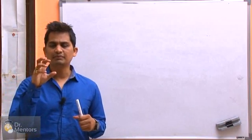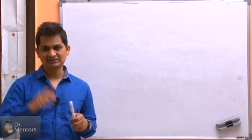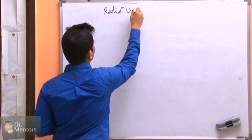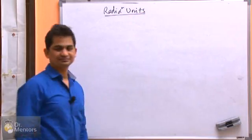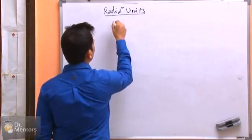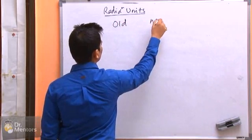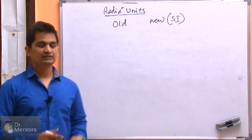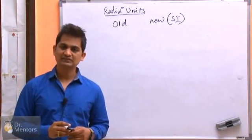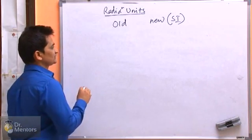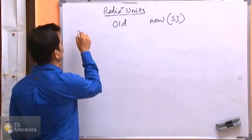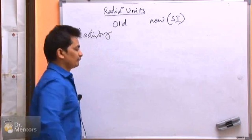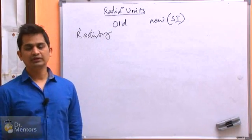We should remember radiation units — that's a very important aspect. We should know the old units and the new units. The new ones are called Standard International units, or SI units.